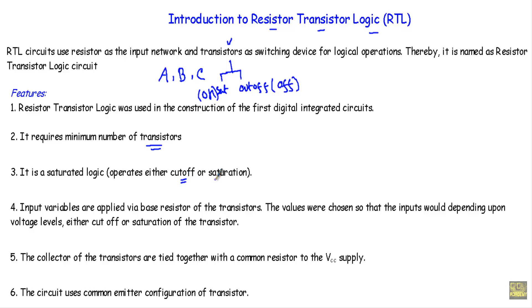Third, it is a saturated logic, meaning our transistor will be either in off state (cutoff mode) or in on state (saturation). If I apply a voltage greater than 0.7 volts, the transistor will be in saturation. If I apply any voltage less than 0.7 volts, the transistor will be in cutoff mode.